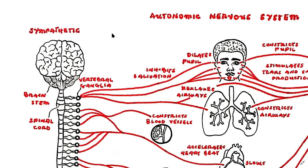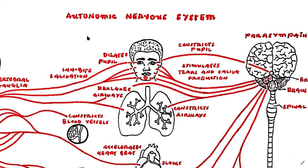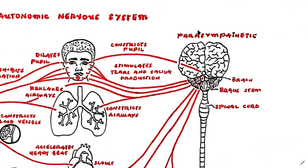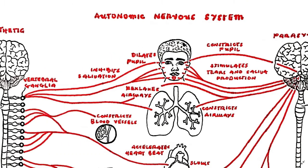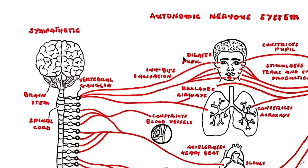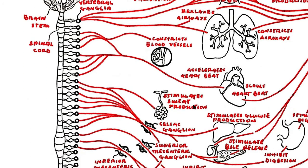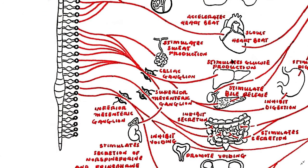The autonomic nervous system is divided into the sympathetic and the parasympathetic systems. The sympathetic system transmits impulses to vertebral ganglia and is responsible for dilating the pupil, inhibiting salivation, constricting blood vessels, accelerating heart rate, stimulating sweat production, stimulating glucose metabolism.